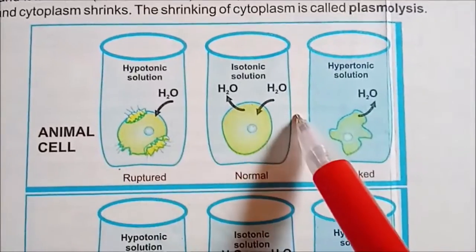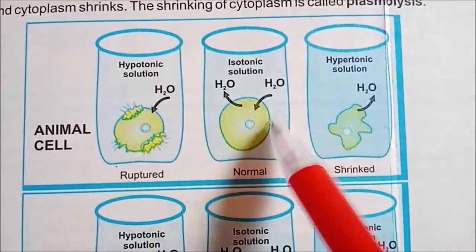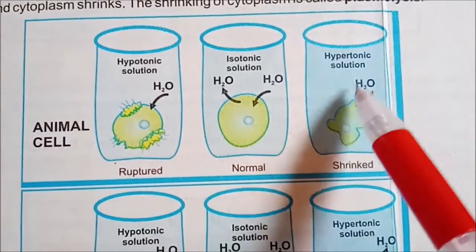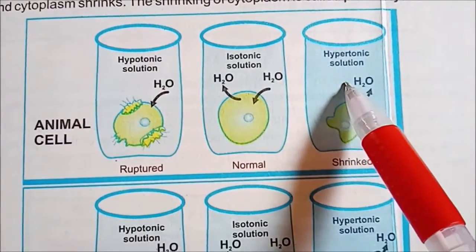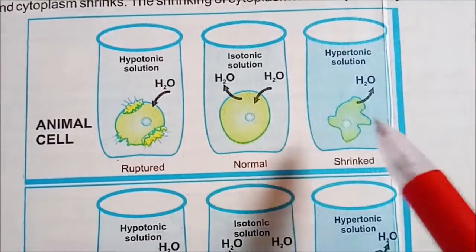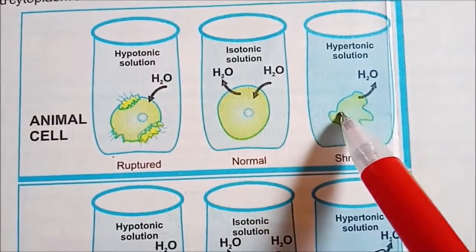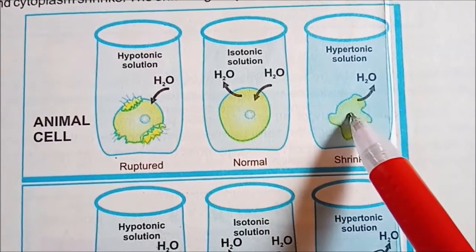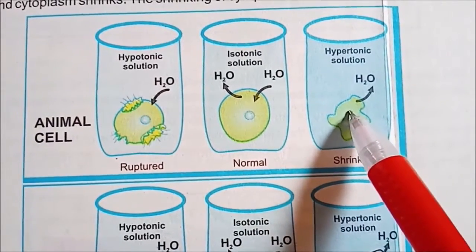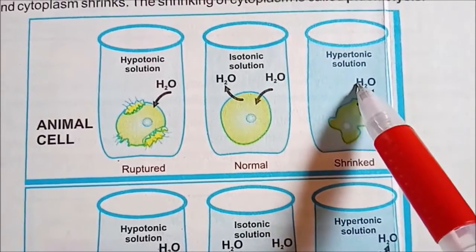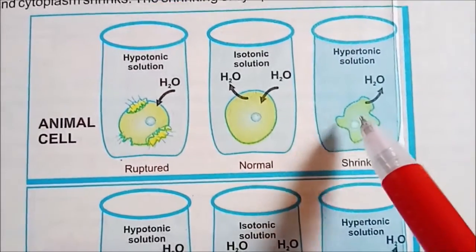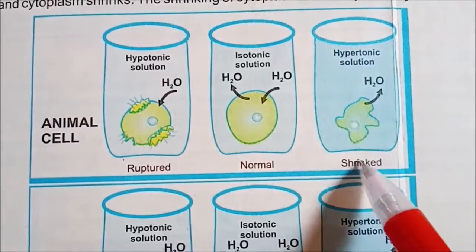Agar animal cells ko hypertonic solution mein rakhein to cell ke andar se paani bahar move kar jayega aur animal cells shrink ho jayenge.